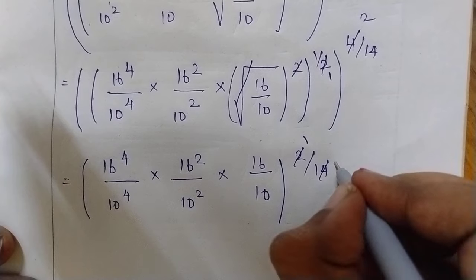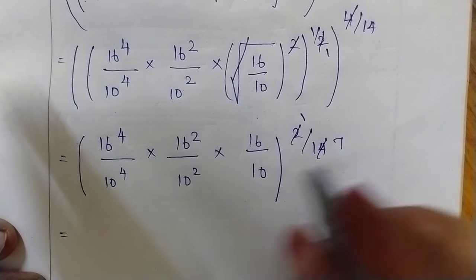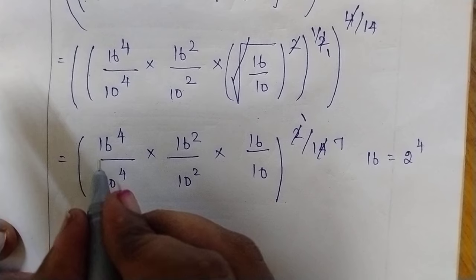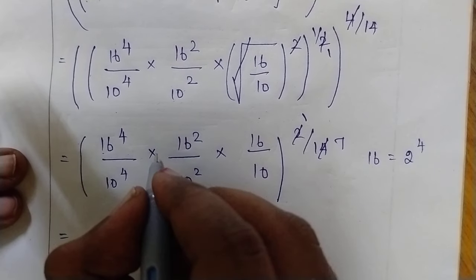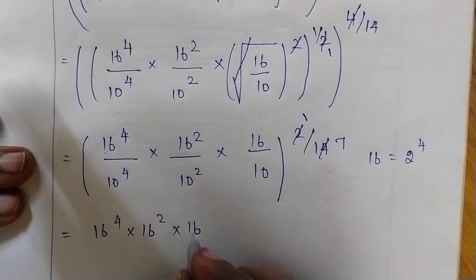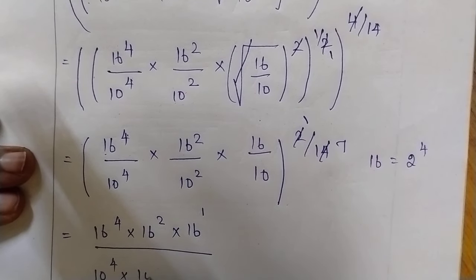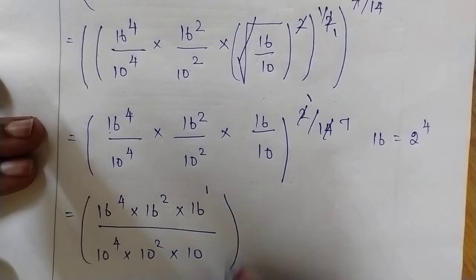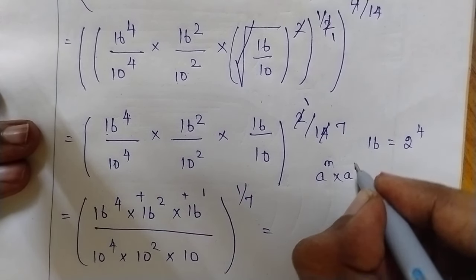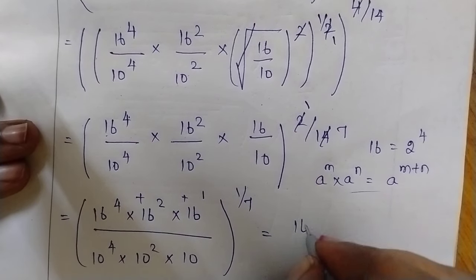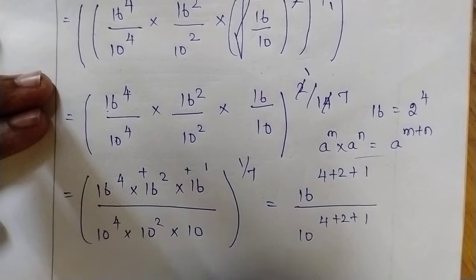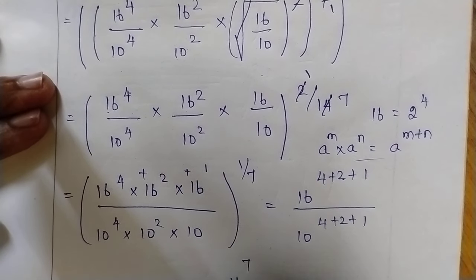2 by 14 — we can cancel: 1 times 2 is 2, 7 times 2 is 14. So we have whole power 1 by 7. We know that 16 equals 2 to the power 4. Or we can keep 16 as it is. Since the base is the same in multiplication, powers get added. Which means: 16 to the power 4, into 16 squared, into 16 to the power 1, divided by 10 to the power 4, into 10 squared, into 10. Based on the rule a^m into a^n equals a^(m+n), this becomes 16 to the power 4 plus 2 plus 1, divided by 10 to the power 4 plus 2 plus 1.